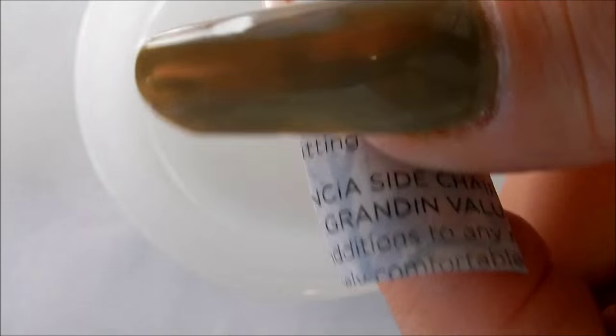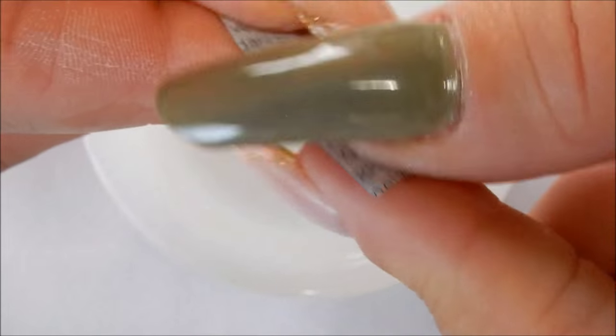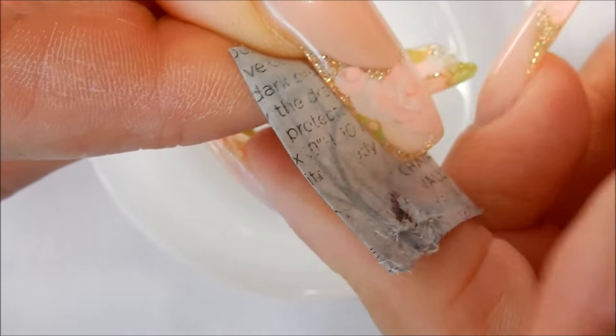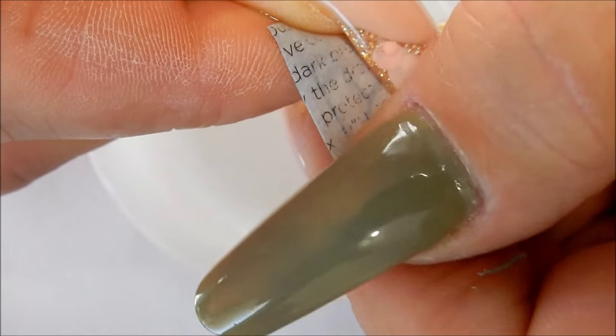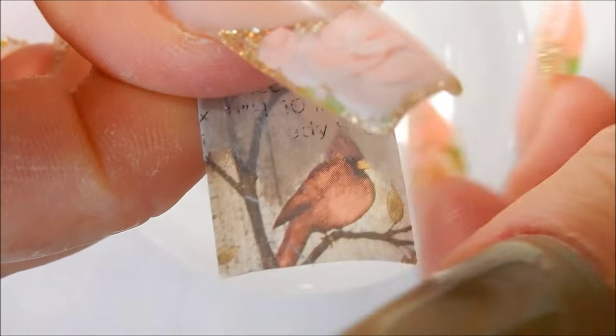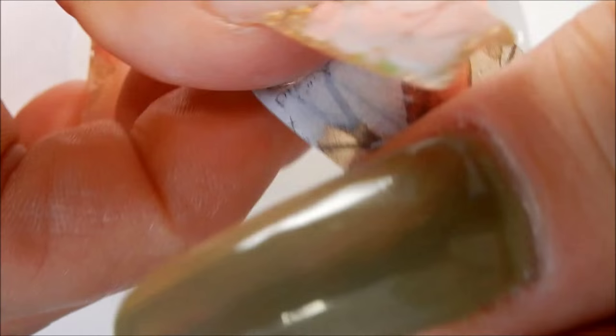When you take it out, you need to start peeling the back off of it, the paper back. You just do that until it all comes off. See, it's coming right off and see that bird image.